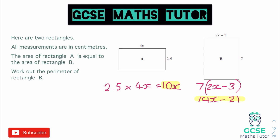So now that we have the expressions for A and B, and it told us in the question that they were equal, just in this bit of information here, so I can set them equal to each other. So I can put the 10X on the left, or I can put the 14X minus 21 on the left of the equation, but it really doesn't matter.